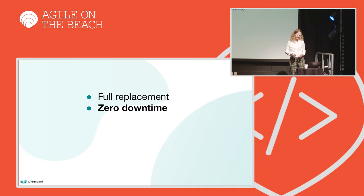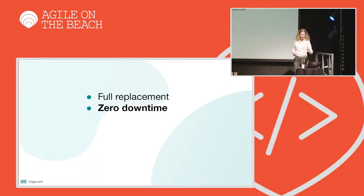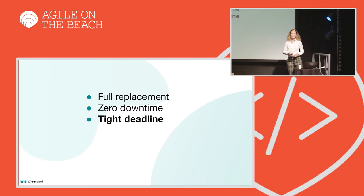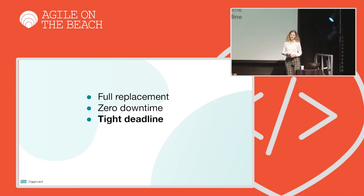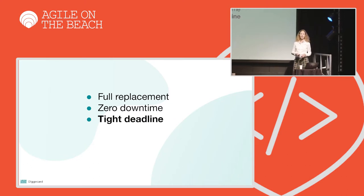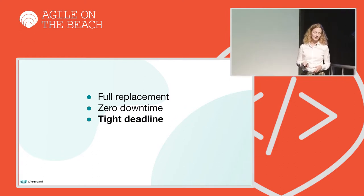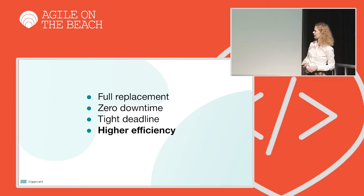There was a date when the systems were to be switched off, and it was very close — within a year. For systems of this complexity and size, that's quite tight, and this deadline was quite dead: the systems were to be switched off. That's not all. The existing solutions used for operations were far from optimal — they required a lot of manual work and individual systems were not integrated with each other. So we could not just copy what was there before; we had to build something new, something considerably more efficient.